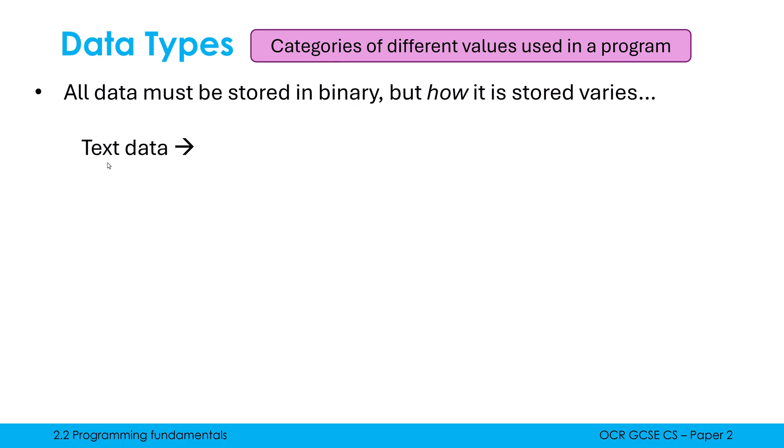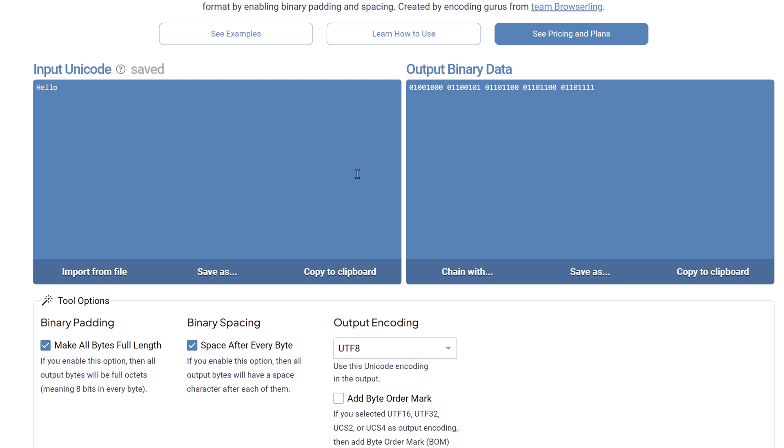By this I mean text data, which we're going to call a string, will be stored using most likely Unicode. ASCII and Unicode are our two big character sets. You learned this in Paper 1. Unicode is the one we use nowadays. So if I have text data in a computer, it will be stored using the Unicode character set. If I want to store the text hello, it just converts it to binary using the Unicode table. The Unicode table says that h is equal to this, and it converts it like that.